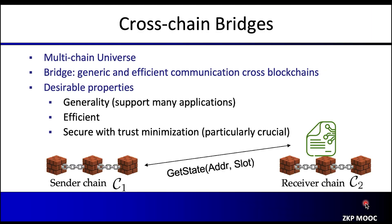Today, the blockchain space has become a fast-growing multi-chain universe where many different blockchains coexist and support different applications. Cross-chain bridges provide an important foundation for this multi-chain universe and provide generic and efficient communications across blockchains. The core functionality of a bridge is pretty simple — it allows a smart contract on the receiver chain to get information about the latest state from the sender chain, to support applications such as token swaps and token exchanges.